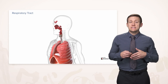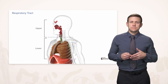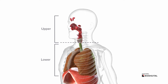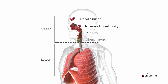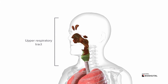The respiratory tract itself can be divided into an upper and lower portion. The upper portion consists of nasal sinuses, nose, the nasal cavity, a shared oral, digestive, and respiratory space called the pharynx, and then the larynx. After that we have the lower respiratory tract starting with the trachea that divides into bronchi to supply the lungs. We're going to focus first on the upper respiratory tract, in particular the nose and nasal cavity.